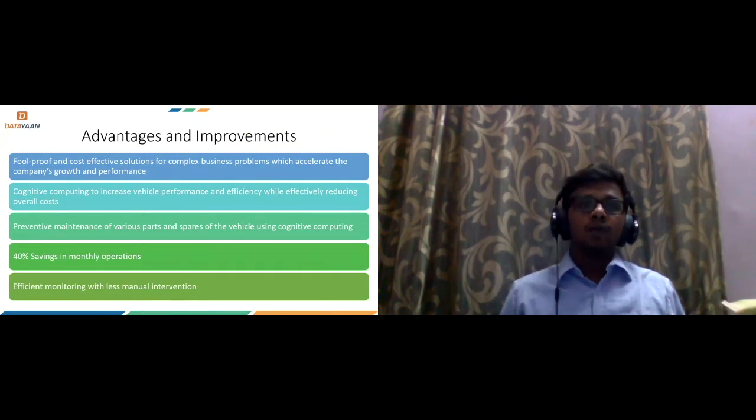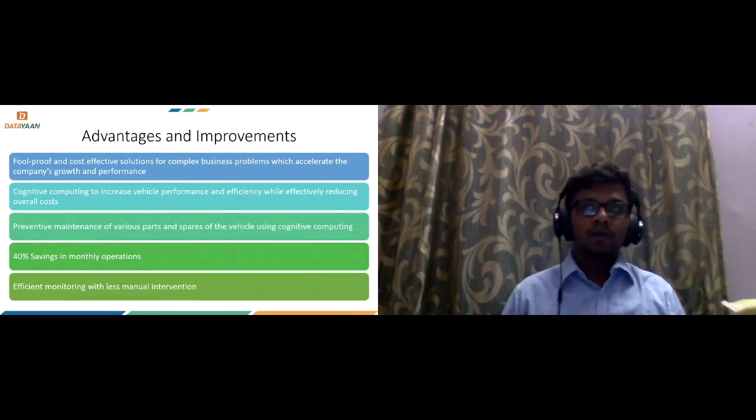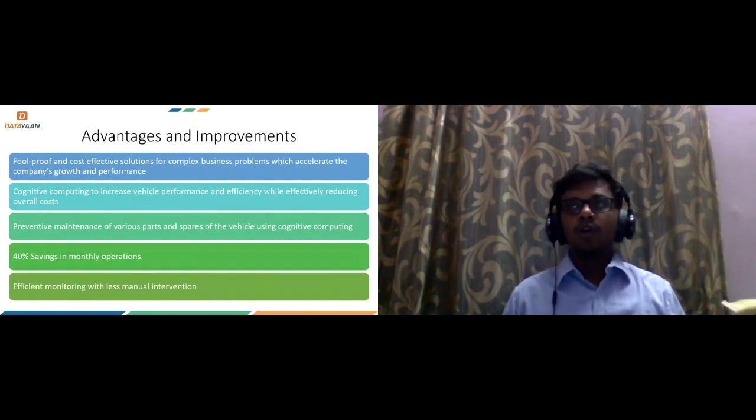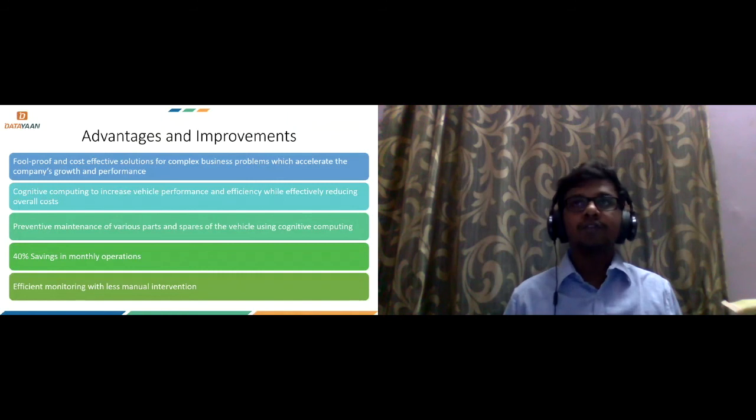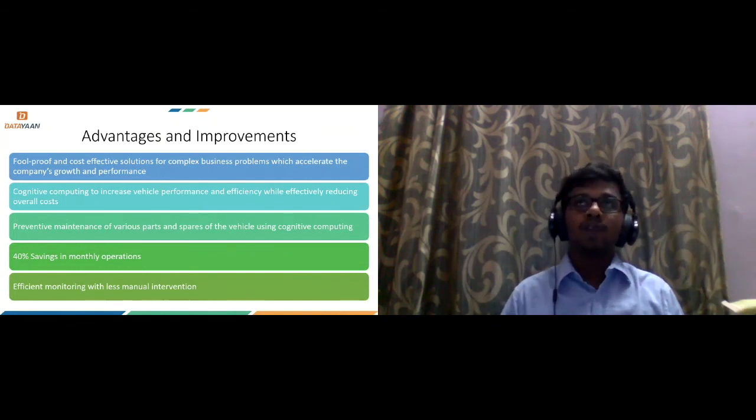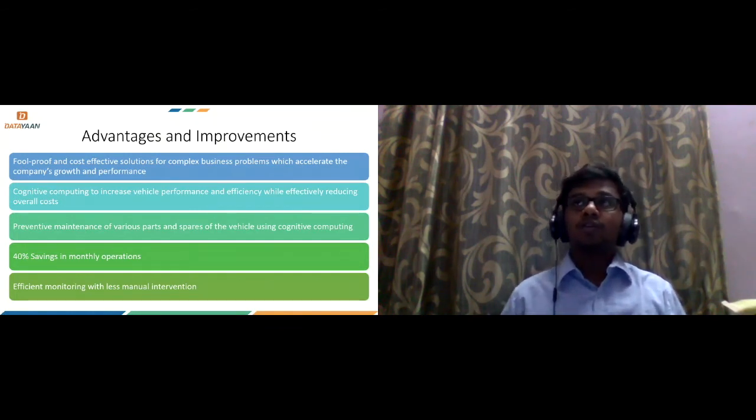And then finally, we have the advantages and improvements. Like I said, this is going to be a foolproof and cost-effective solution that we are reducing wherever possible, and this is going to be less room for errors. And then we are going to use cognitive computing to actually identify where the wear and tear or the tires are going to need changes. And one more thing is like on the monitoring side as well, if the vehicle is over-speeding or if there is harsh braking and harsh accelerations, then it will immediately call the driver telling him to slow down or asking him to take a break. So all these things are covered under cognitive computing.